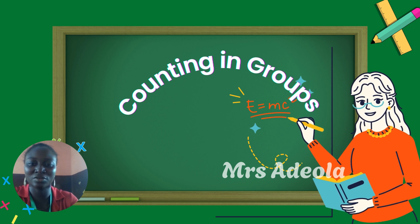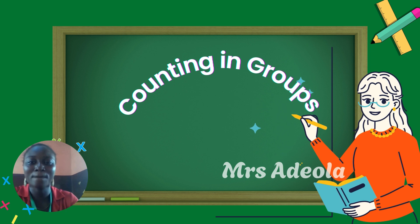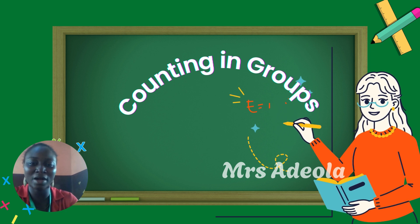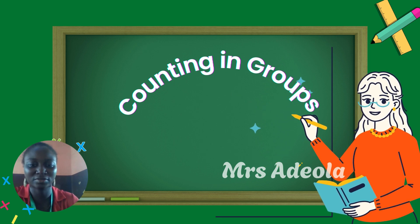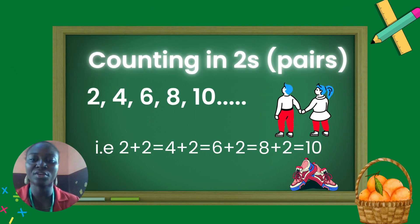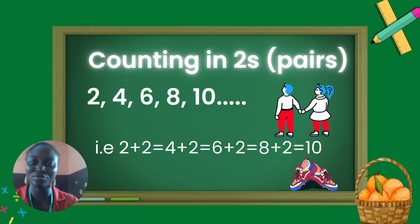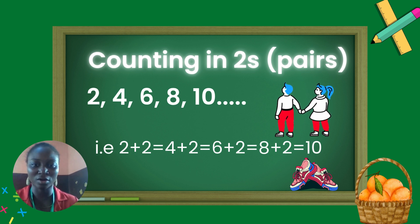What is counting in groups? Counting in groups means putting numbers or objects in various proportions. So, if you have to count in twos in seven places, this is the addition of two in seven consecutive order.